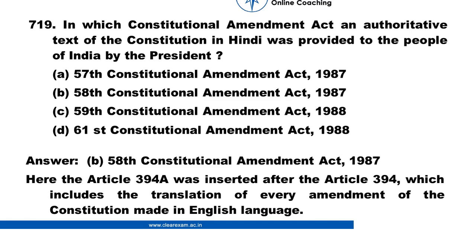In which Constitutional Amendment Act was an authoritative text of the Constitution in Hindi provided to the people of India by the President? a. 57th Constitutional Amendment Act in 1987. b. 58th Constitutional Amendment Act in 1987. c. 59th Constitutional Amendment Act in 1988. d. 61st Constitutional Amendment Act in 1988.